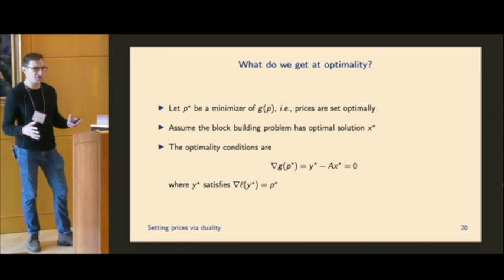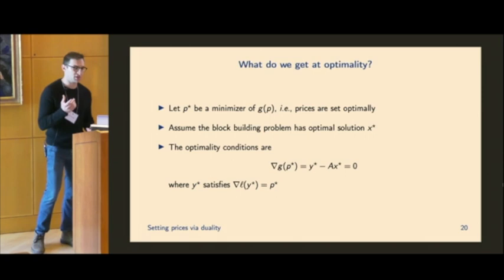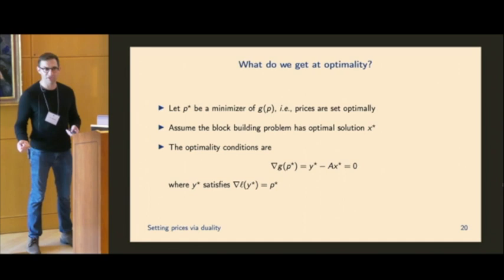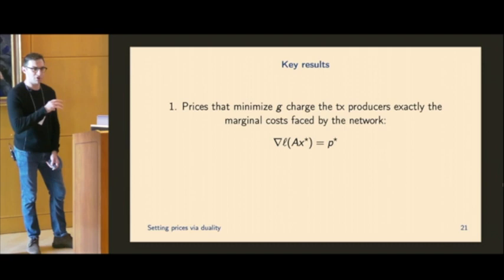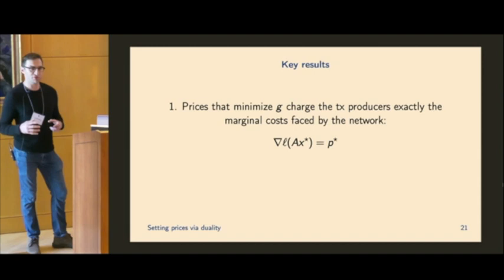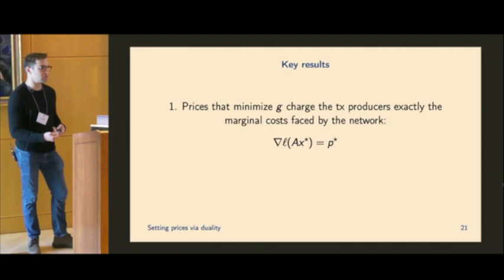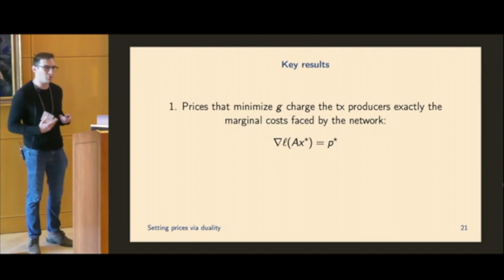And what do we end up getting at optimality? So, like, let's assume that we have the correct prices, P star, then the optimal solution to the block building problem, given these prices, is going to be X star. And if we write out the optimality conditions, which is just first order conditions, we get that the utility, or sorry, the utilization of the network, Y star, is exactly equal to AX star. And so Y is going to satisfy this, because it comes out of the conjugate function, it's going to satisfy this, the gradient of the loss evaluated at Y star is going to be equal to the optimal prices, P. If we dive into what that means, replacing kind of Y star with AX star, we can interpret this as the prices that minimize G charge the transaction producers exactly the marginal cost faced by the network. So in other words, if we solve this optimization problem, or if we correctly set the prices, the network is charging exactly the marginal cost for resource utilization, which is kind of a good thing. This is what we would want out of this problem.